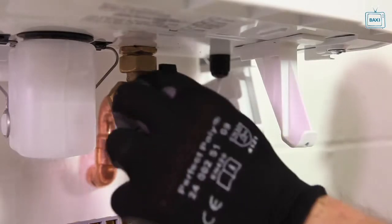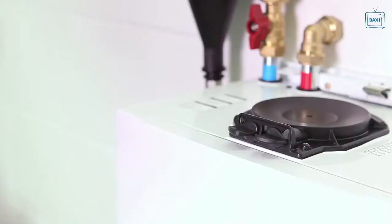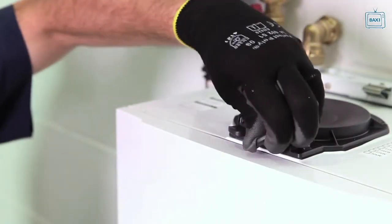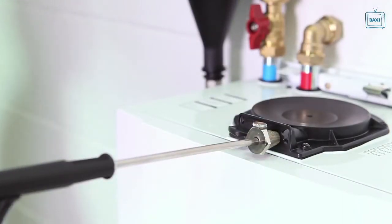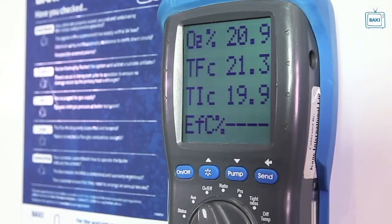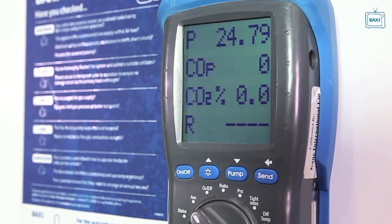Perform the flue integrity combustion check by inserting the analyser probe into the air inlet testing point, allowing the reading to stabilise. A positive check will give a reading of oxygen equal to or greater than 20.6% and carbon dioxide less than 0.2%.